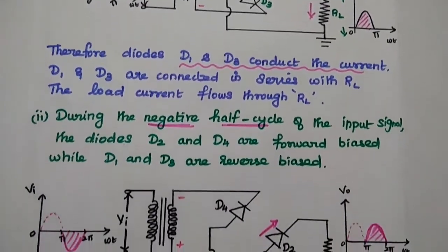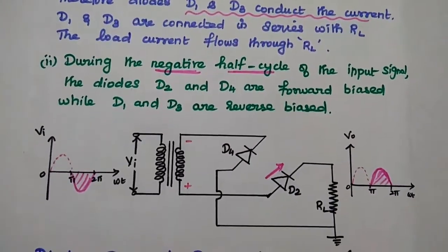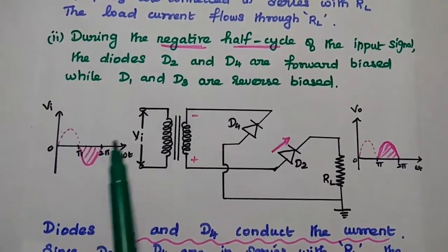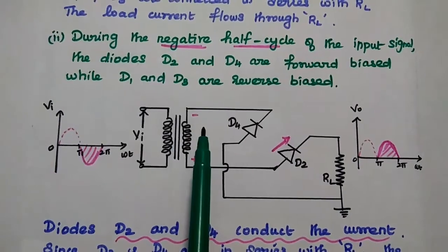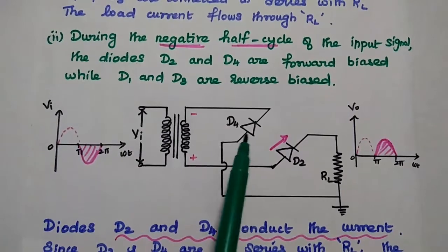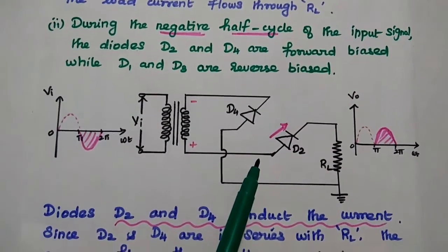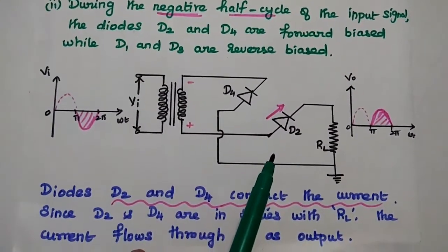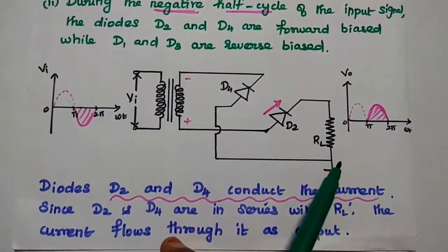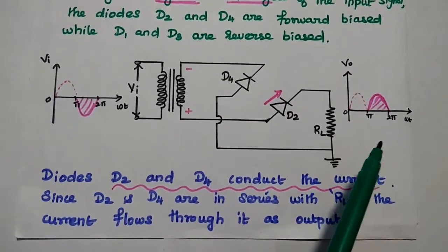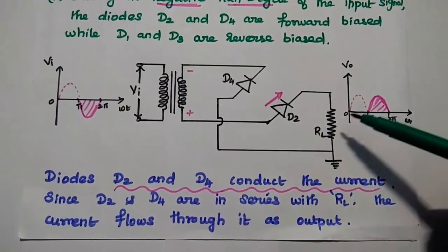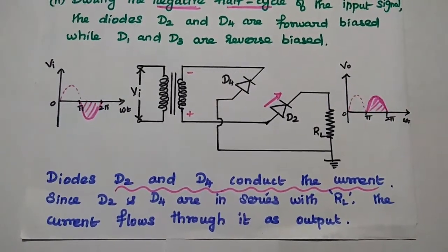During the negative half cycle, the diodes D2 and D4 are forward biased. When the negative half cycle is applied, the polarities change — here it is negative, here it is positive. Then D2 and D4 are forward biased and D1 and D3 are reverse biased. There is current conduction through D2 and D4, and we get the output across the load resistance in the same direction. So we get output for the negative half cycle also, which is called the fully rectified output signal.